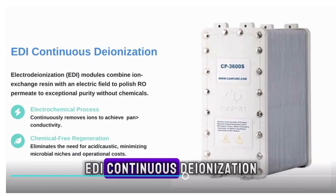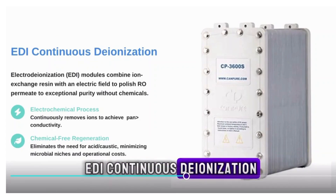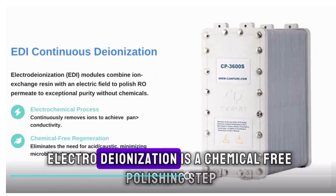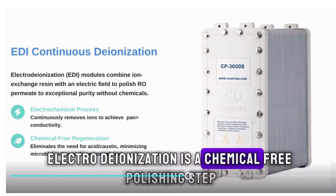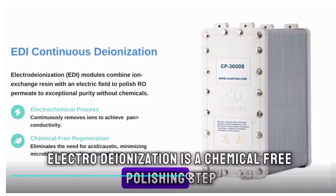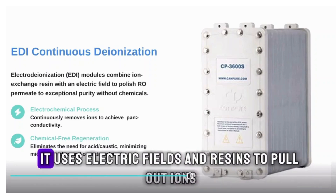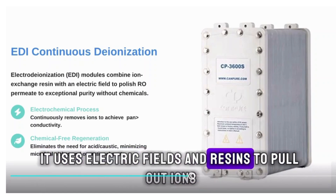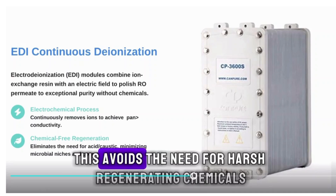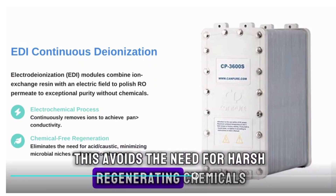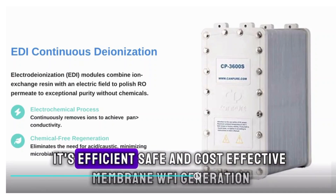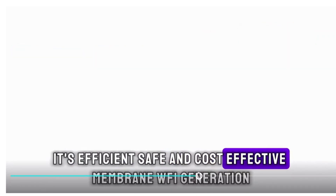Electrodionization, or EDI, is a chemical-free polishing step. It uses electric fields and resins to pull out ions, avoiding the need for harsh regenerating chemicals. It's efficient, safe, and cost-effective.